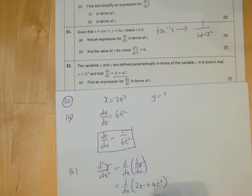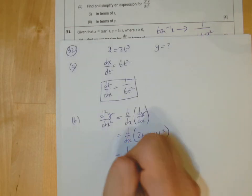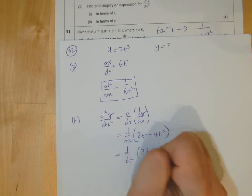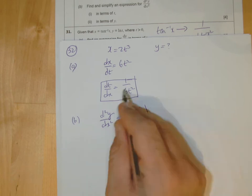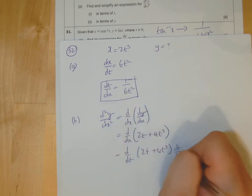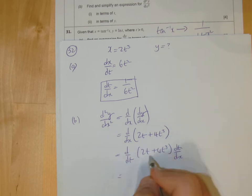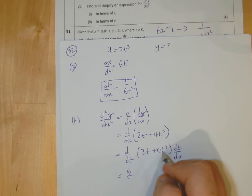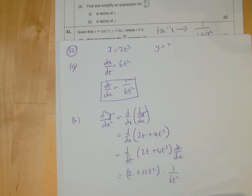So d by dx of this. Now you know, we can't do that with respect to x. We do it with respect to t. And then we've got to plonk dt dx at the end. That's why I put it in the box there.